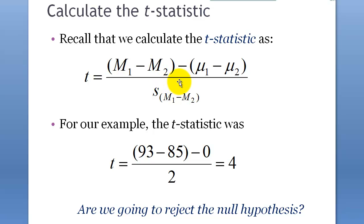T calculation, as I said, all the same values. So t will be, standard error of mean difference was 2, and it's 93 minus 85, blah, blah, blah, and it's 4. It's the same, actually, it's exactly the same number.